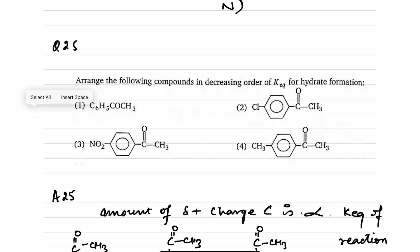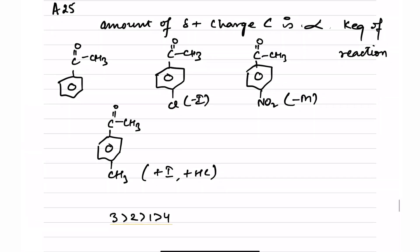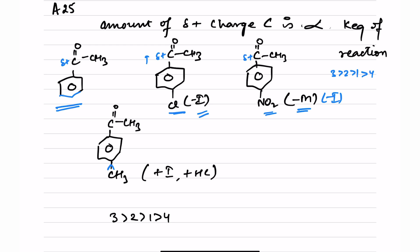Question number 25: arrange compounds in decreasing order of Keq for hydride formation. Keq of any nucleophilic addition depends on delta positive charge on the carbonyl carbon. The base compound has a certain delta+. With Cl (−I effect), delta+ increases. With NO2 (−M and −I), delta+ is very high. With a donation group, delta+ decreases. So the order is: compound 3 > compound 2 > compound 1 > compound 4. The answer is option A.